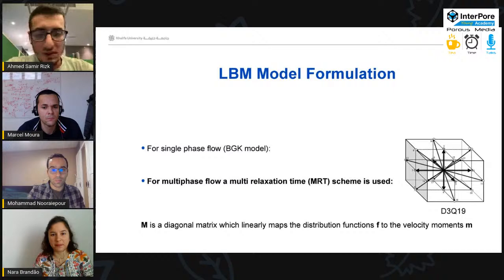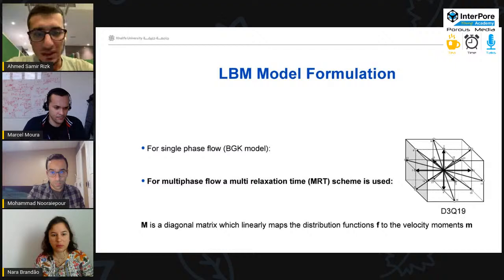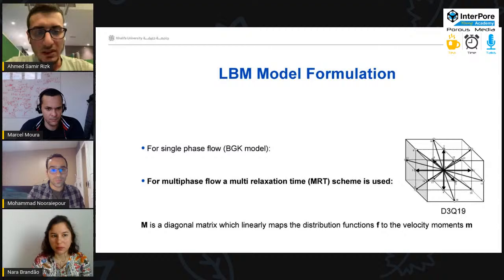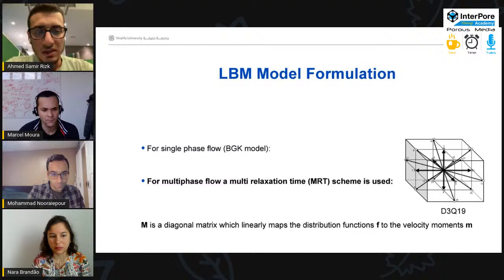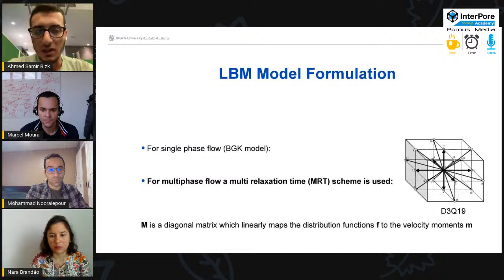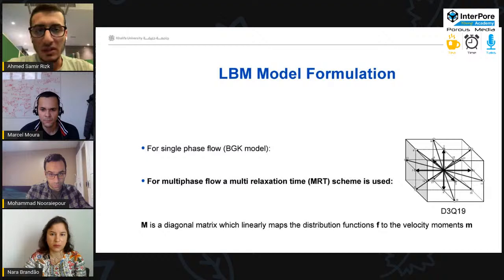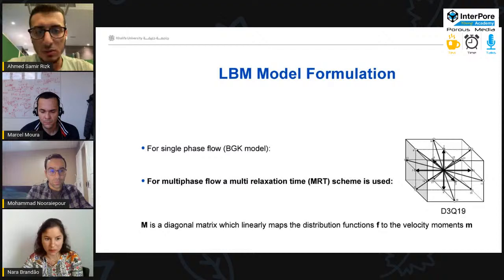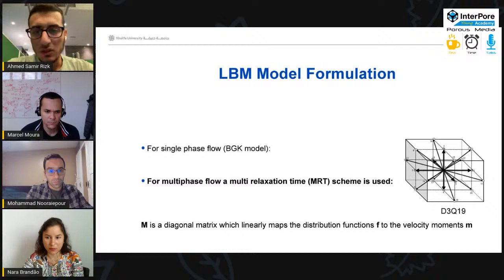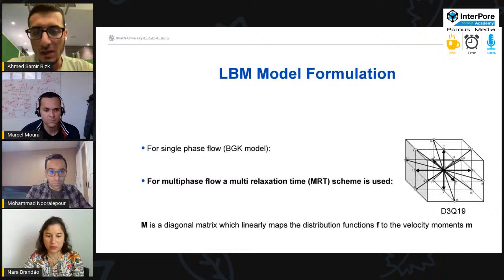I'm not sure if you can see the model of the equations, but I will describe as much as I can. We here use a D3Q19 model, which is a three-dimensional model that has density distribution function in 19 directions. We use also a color gradient model to represent the two phases. This color gradient represents each distribution function of each fluid with a distinct color. One is blue and one is red. Then the total density distribution function is the summation of the density distribution function of each fluid. But we don't use a simple BGK model that is used in the single phase flow for simulating this two phase flow. But we use a multiple relaxation time scheme that uses a matrix that can map the density distribution function from the velocity space to the moment space.